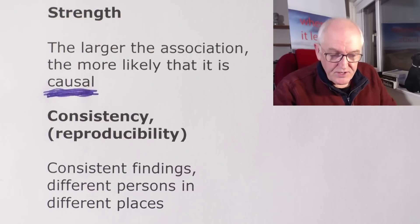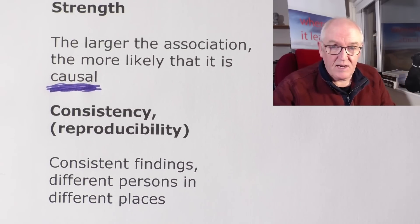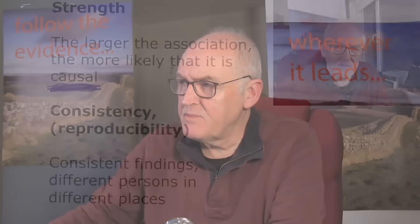Consistency or reproducibility: consistent findings in different persons in different places. Of course, this is exactly what we're seeing. It looks like whatever is causing the excess deaths in Australia is also causing the excess deaths in the UK — some 11,000 to 12,000 miles apart — so it looks like there's some common factor here. Consistency or reproducibility appears to be present.